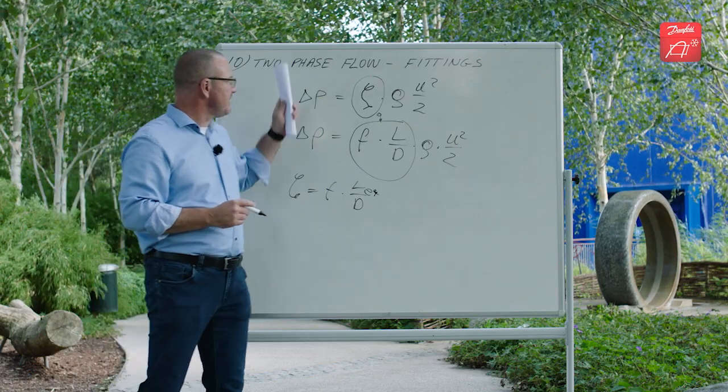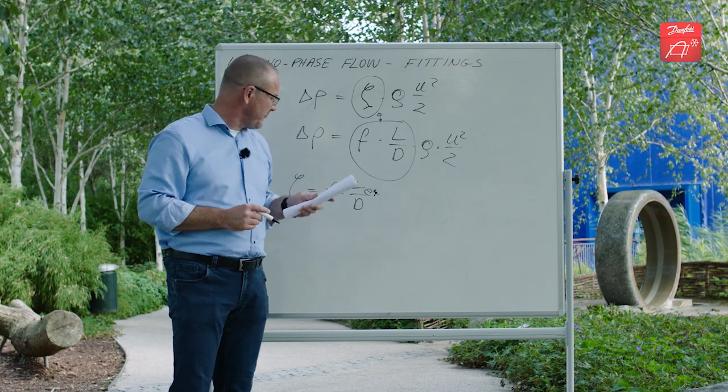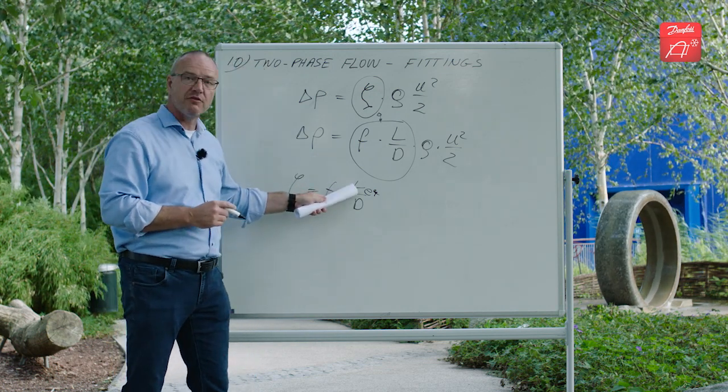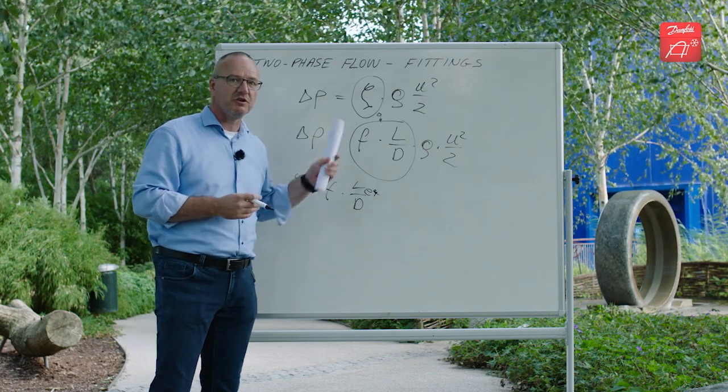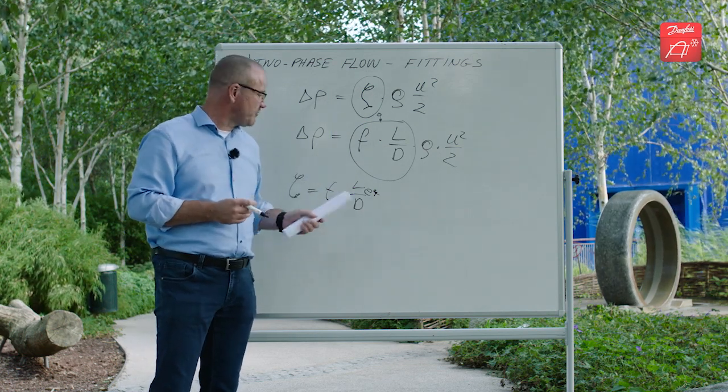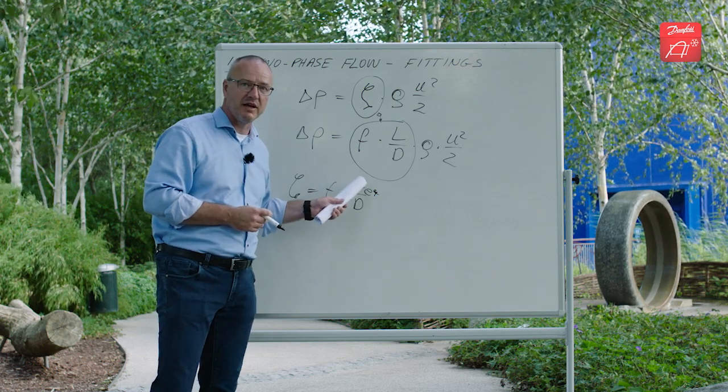So the exercise here when you talk about two-phase flow is actually to calculate this equivalent length and then use the Friedel correlation that we showed you last time to calculate the pressure drop in a pipe of equivalent length.